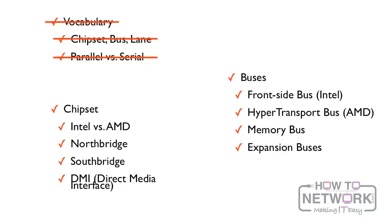So we've talked about the chipset, Intel vs AMD as our two main competitors and manufacturers, the North Bridge — responsible for RAM communication and high-speed graphics — the South Bridge — everything else — and the DMI, Direct Media Interface, which connects the two together. Let's get into buses.